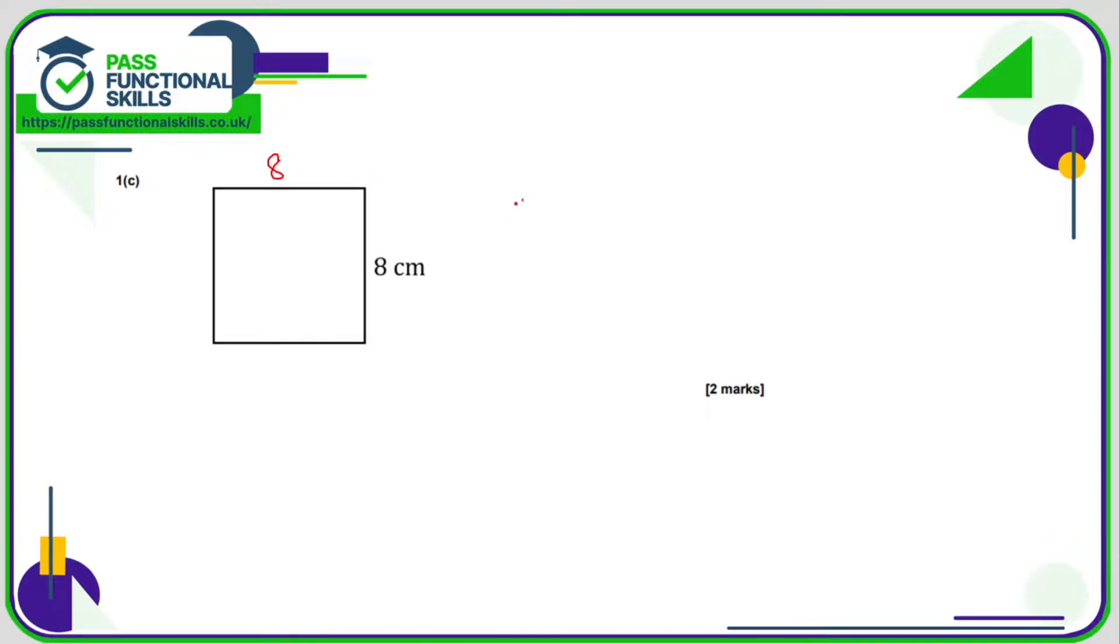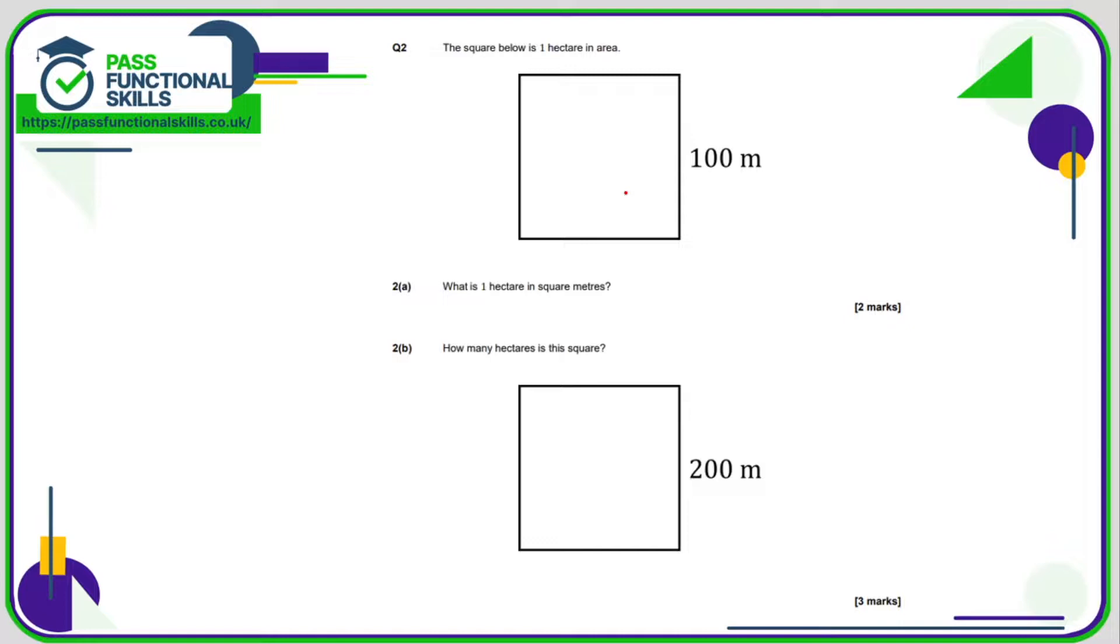Here is 8 times 8, so 64 square centimetres. Question 2 is also non-calculator. So the square below is 1 hectare in area. So if 1 hectare is this square, that's going to be 100 times by 100. And 100 times by 100 is 100 with 2 more zeros put on the end. So 1 hectare is 10,000 square metres. I didn't know that.